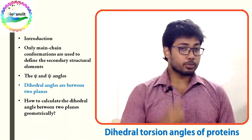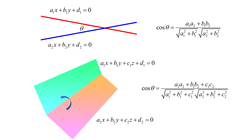Now, how to calculate them? If you remember your high school trigonometry, here is your solution. Let's say the first straight line is a1x + b1y + c1 = 0 and the second is a2x + b2y + c2 = 0. Both of them are in the xy plane. The angle between these two straight lines is given by the standard formula.